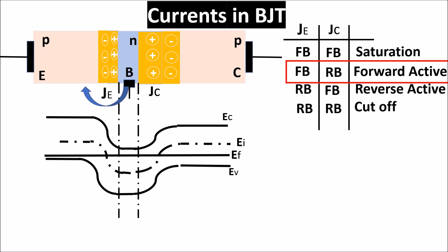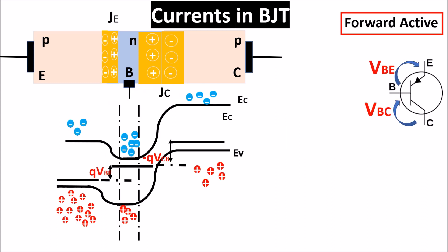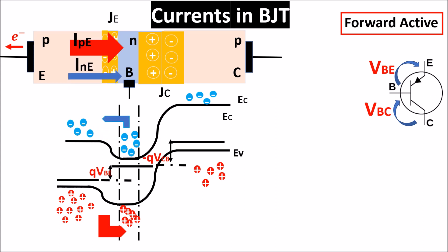If we forward-bias the emitter junction JE with VEB and reverse-bias the collector junction JC with VBC, the band energy diagram changes such that the step among the different Fermi levels is given by the charge times the voltage applied to each junction. When we are in forward active mode, because of the forward bias of the emitter-base junction, some holes from the emitter go to the base creating a current we call IPE, where E is for emitter and P is for holes. The missing holes have to be replaced from the voltage source VEB for neutrality, so electrons go out from the metal contact.